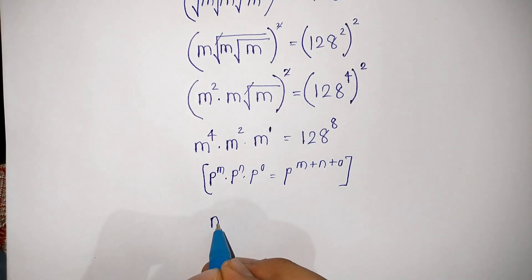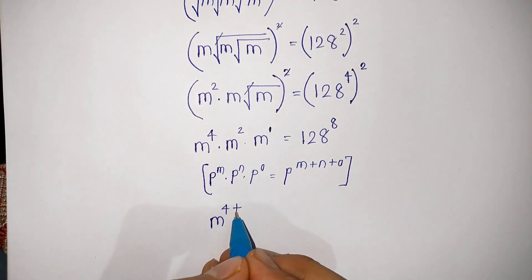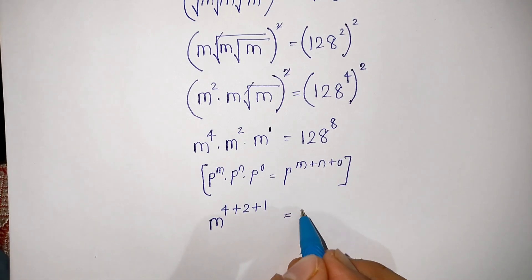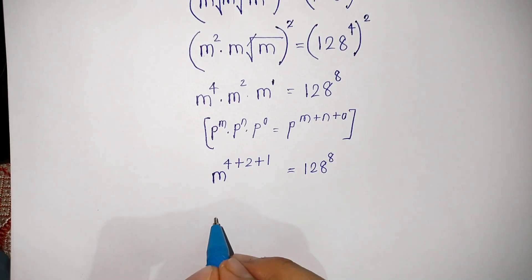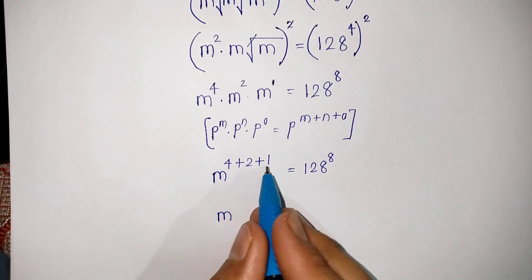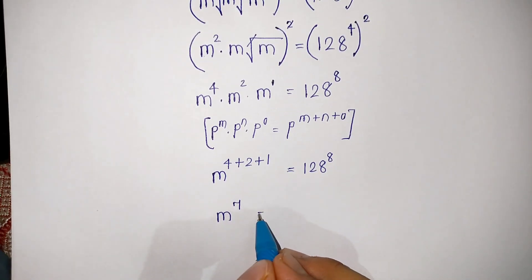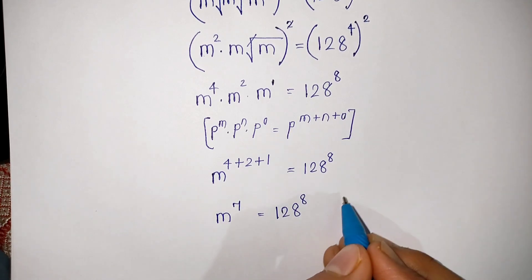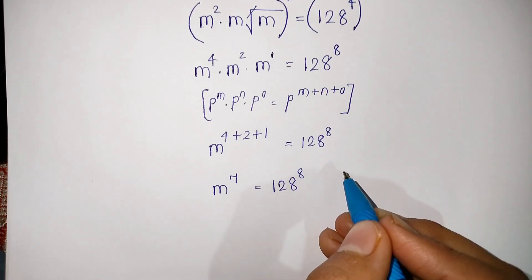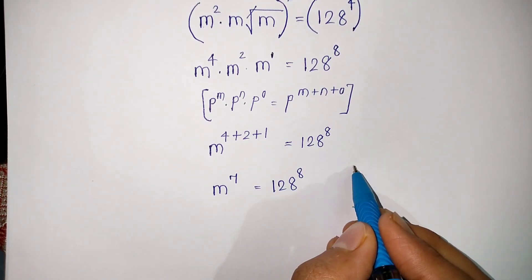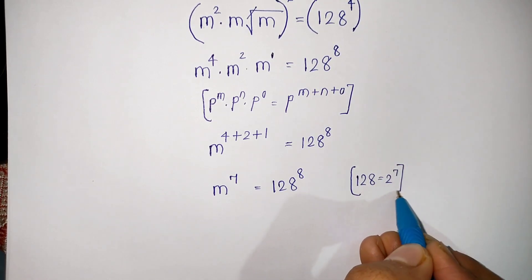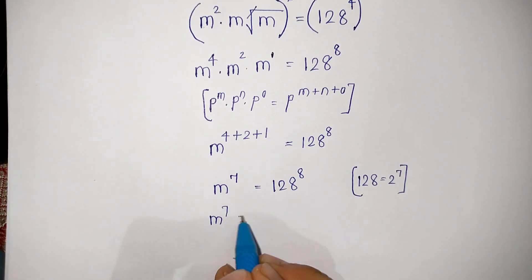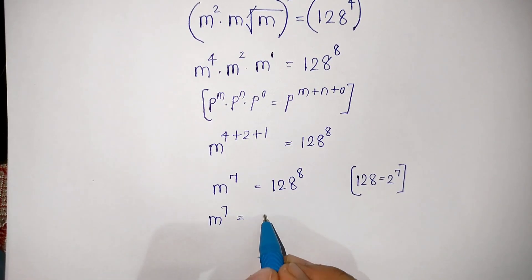4 plus 2 plus 1 equals 7, so M to the power 7 is equal to 128 to the power 8. Now we can write 128 as 2 to the power 7, so M to the power 7 is equal to 2 to the power 7 into 2 to the power 8.